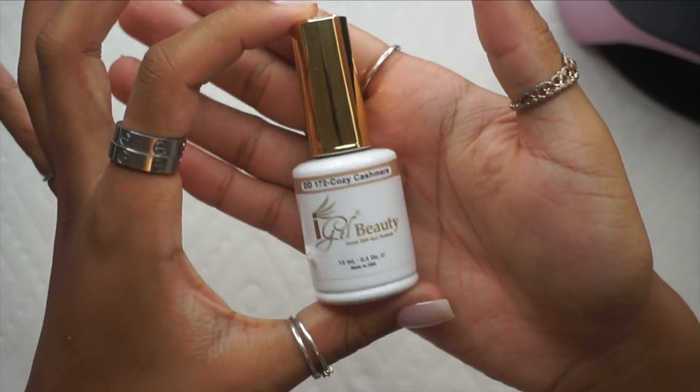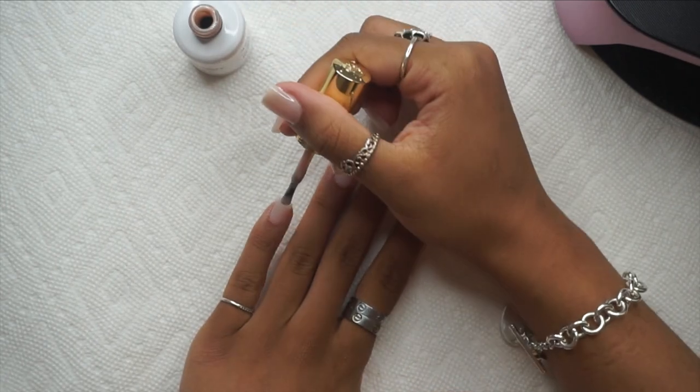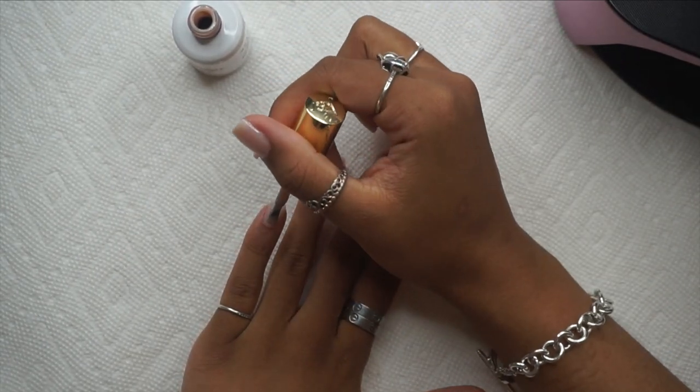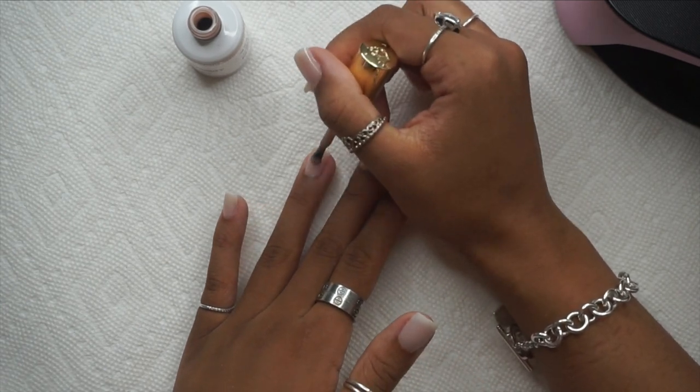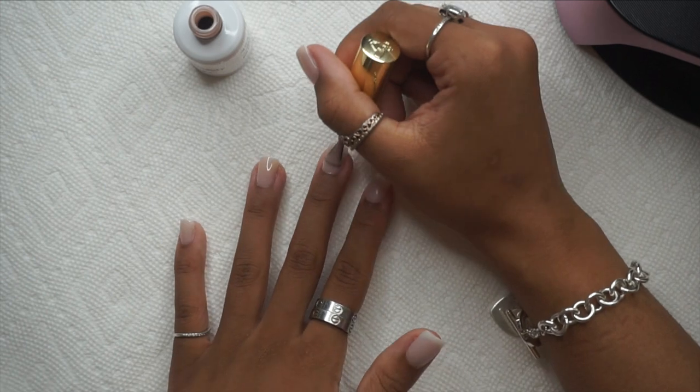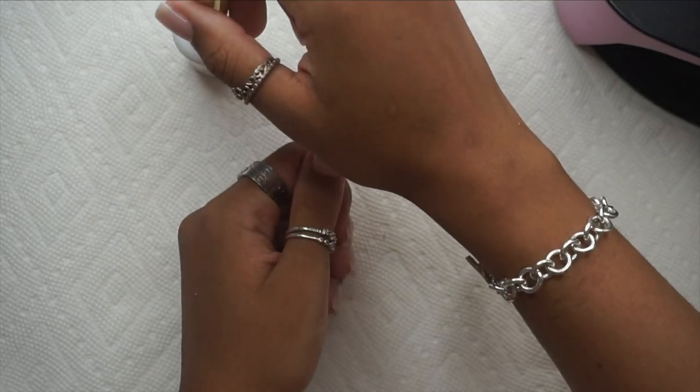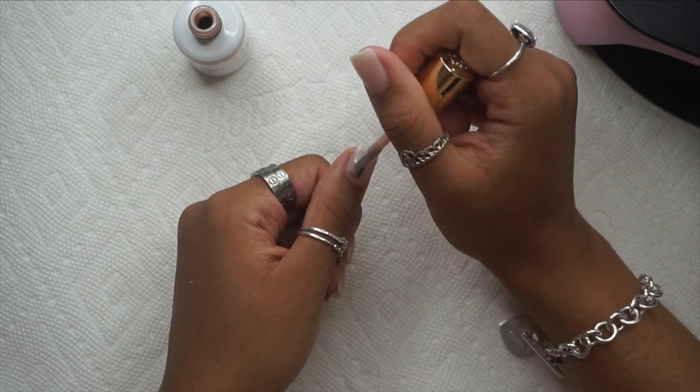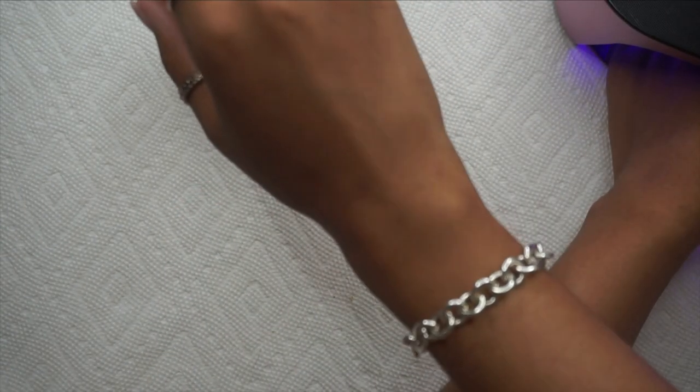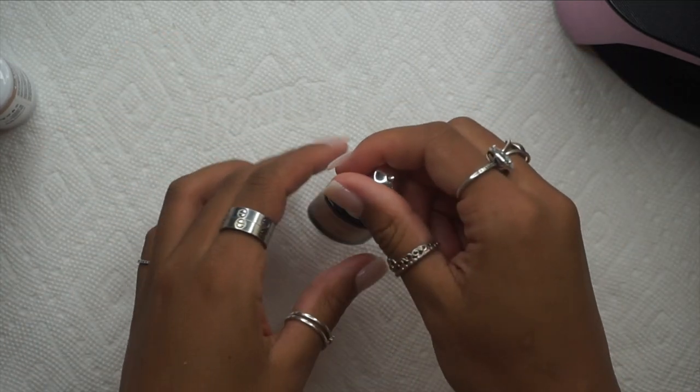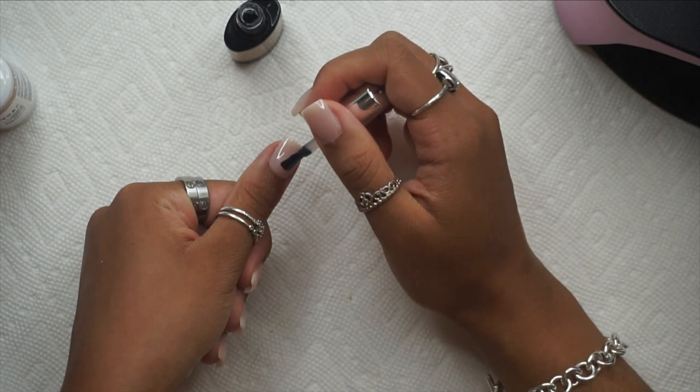We're gonna go in with my go-to—this is my forever favorite polish, Cozy Cashmere by iGel Beauty. I'm not gonna lie, iGel Beauty—I would never order from them again. I love this gel polish. If I ran out of it, yes I would order from them again to get it, but that is it. They take way too long for their products to get here. It took this product three months to get to my house. Three months waiting for this product—nothing in life is worth that.